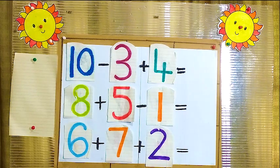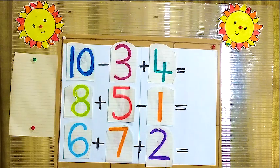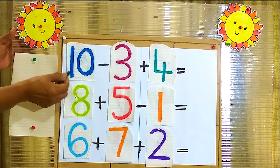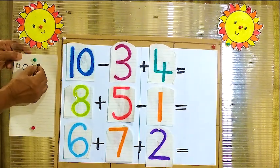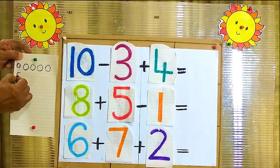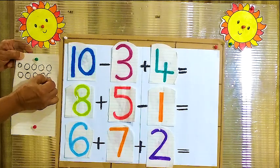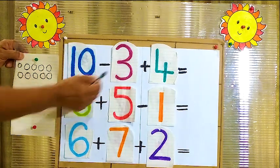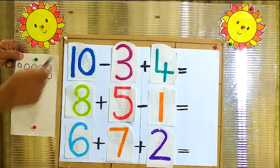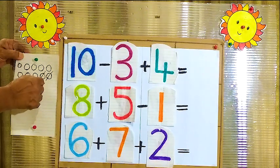Now what we have to do? Now here a piece of paper. You can use this paper to draw balls — then it's easy for you. Now here I am drawing 10 balls: 1, 2, 3, 4, 5, 6, 7, 8, 9, 10. Now we have to take out 3 from this 10. We will cut 1, 2, 3.